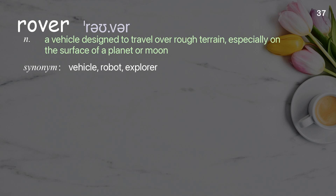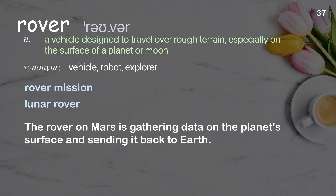Rover: a vehicle designed to travel over rough terrain, especially on the surface of a planet or moon. Examples: rover mission; lunar rover. The rover on Mars is gathering data on the planet's surface and sending it back to Earth.